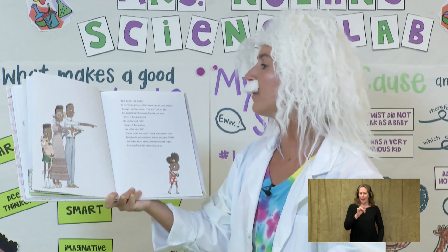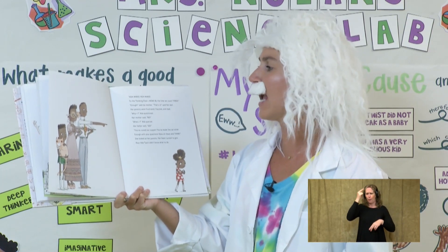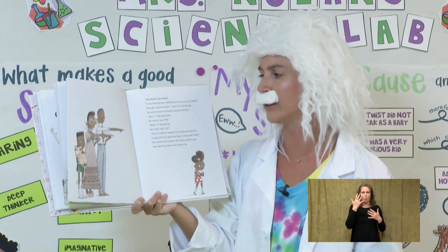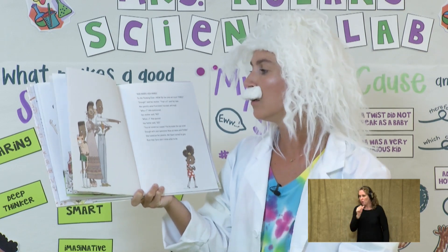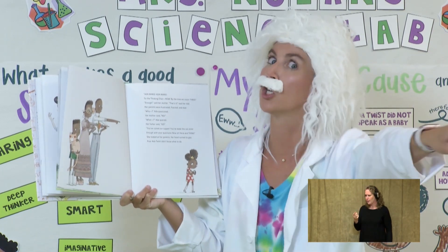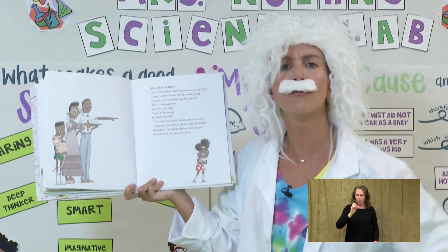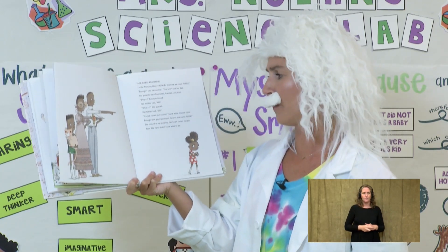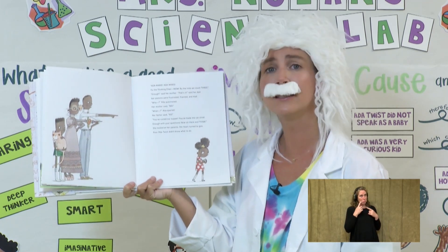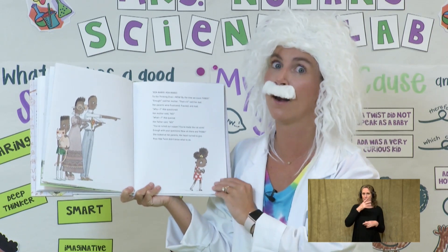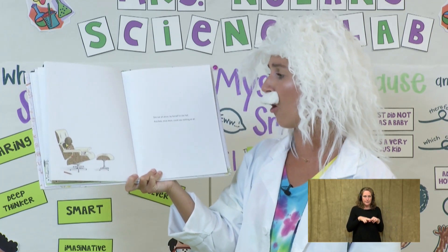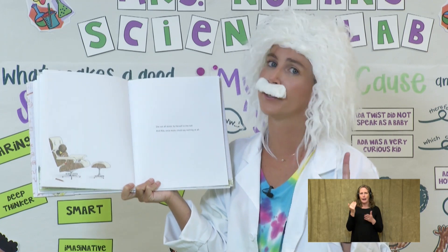She started again, but her parents yelled, 'Stop!' Ada was about to put the cat in the washing machine. 'Ada Marie! To the thinking chair! Now!' Enough, said her mother. That's it, said her dad. Her parents were frustrated, frazzled, and mad. 'Why?' Ada questioned. Her mother said, 'No!' 'What?' Ada wondered. Her father said, 'Go! You've ruined our supper. You've made the cat stink. Enough with your questions. Now sit there and think.' Poor Ada Twist didn't know what to do. So her parents had had enough of all of Ada's experiments.